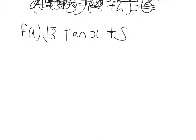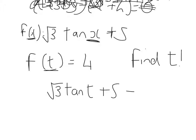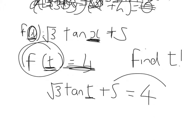Next one: I'm told that f of x equals root 3 tan x plus 5, and that f of t equals 4 — find the values of t. So whatever's in the bracket, it's root 3 tan of whatever's in the bracket plus 5. So it's t in the bracket, so root 3 tan of t plus 5 is going to be equal to 4. It's a trig equation — trig terms to the left, number terms to the right. So root 3 tan t is equal to 4 minus 5, which is minus 1.